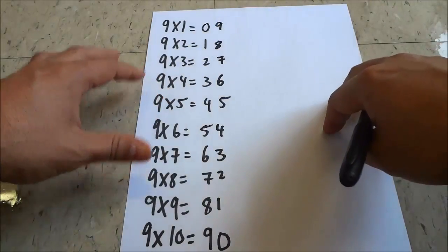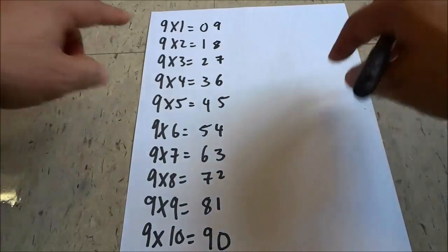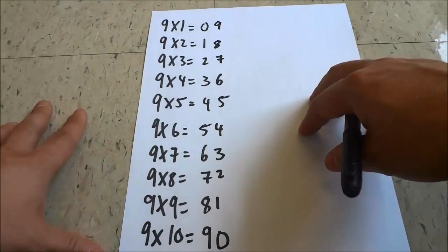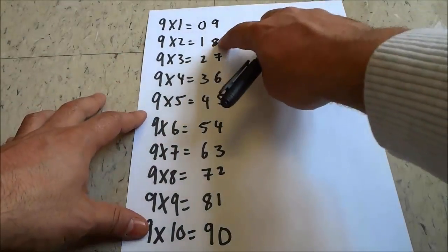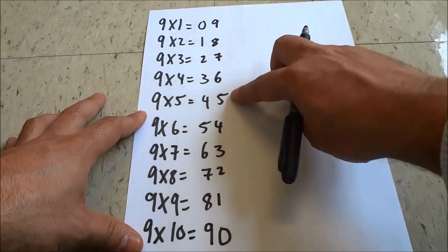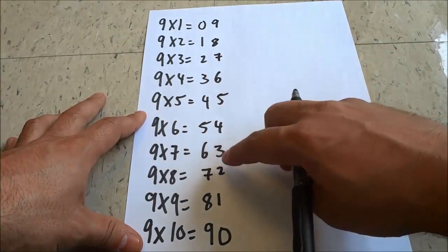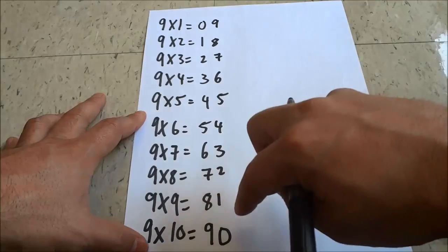And as you can see I have written out all of the answers for the nine times multiplication table. 9, 18, 27, 36, 45, 54, 63, 72, 81, 90.